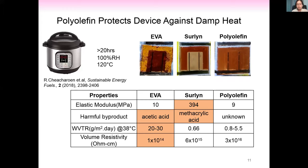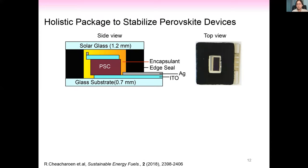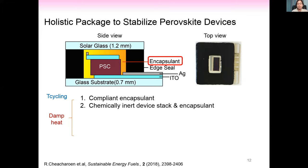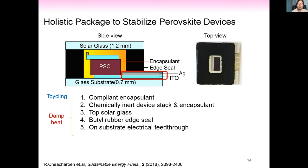In conclusion, one simple encapsulation design was developed that stabilizes perovskite solar cells against crucial environmental stressors and passes three IEC standardized tests. This technique can be easily implemented for outdoor testing following the consensus statement. The package design and stability results are published — please don't hesitate to contact if you want to collaborate or join the team.